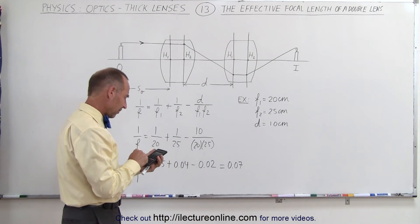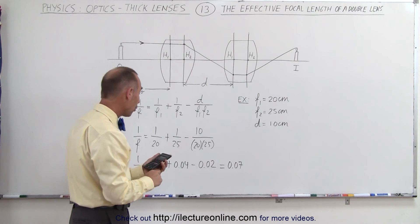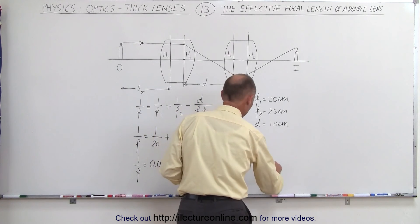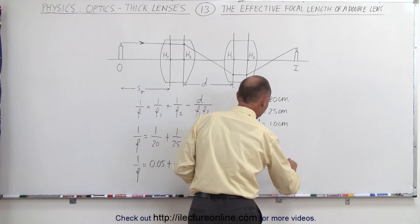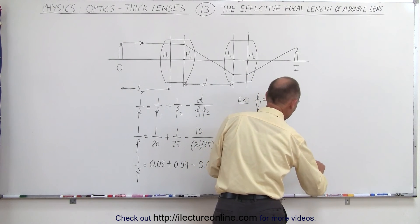So 0.07, take the inverse, we get 14.3 centimeters. So this then implies that the effective focal length of the two lenses is 14.3 centimeters.